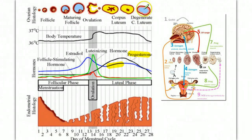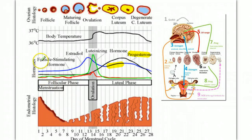If the corpus luteum degenerates, our levels of progesterone and estrogen begin to drop, and we have our new flow phase as the endometrium wall breaks down. We release the suppression of FSH and LH, and they can start to rise again, so we have a new follicle starting. And since it's a cycle, we start all over again.